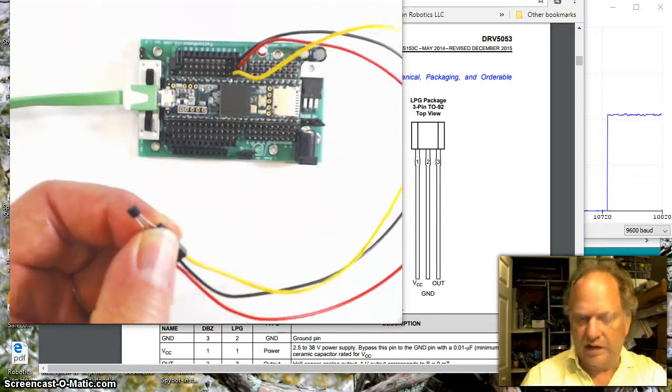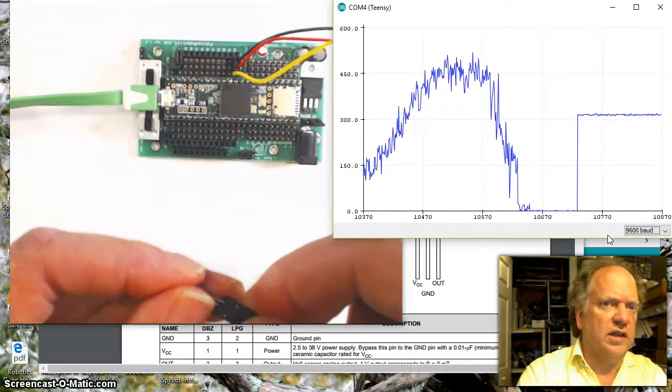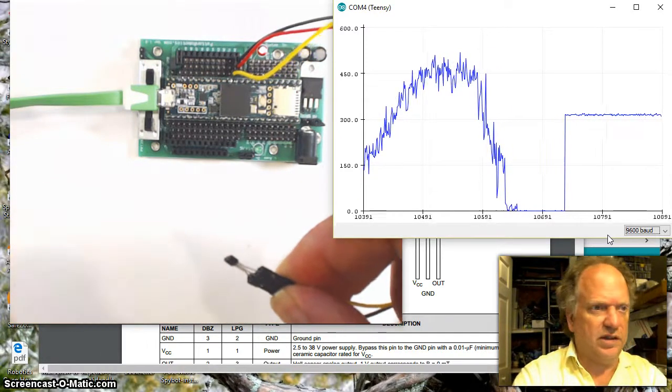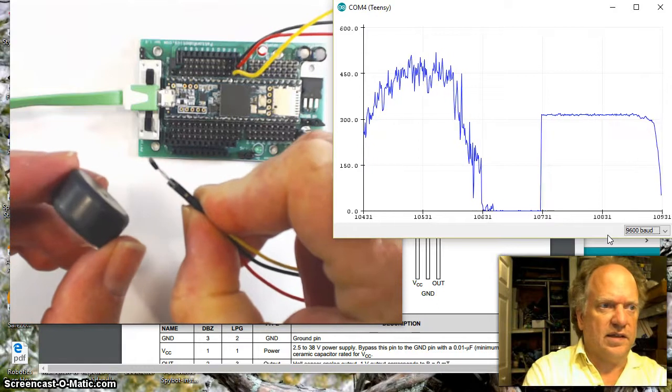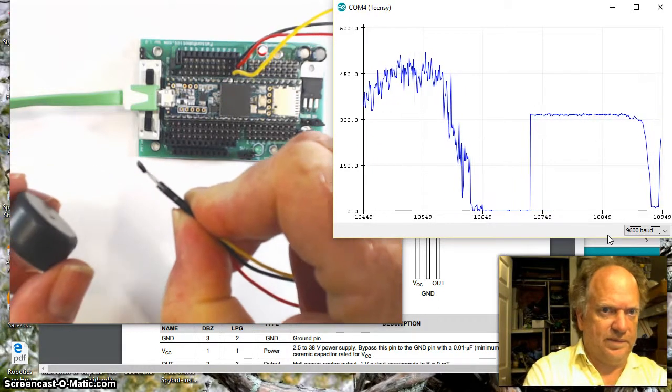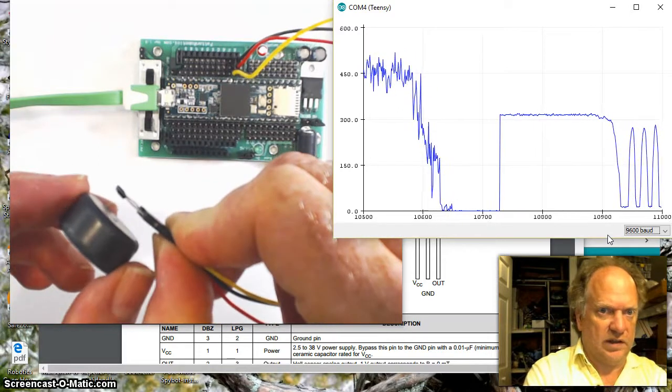And let me pull this graph back up. And you can see I've got a nice baseline reading, and here I've got a ceramic magnet. And as I get closer and closer to the magnet, of course I get this really nice response.